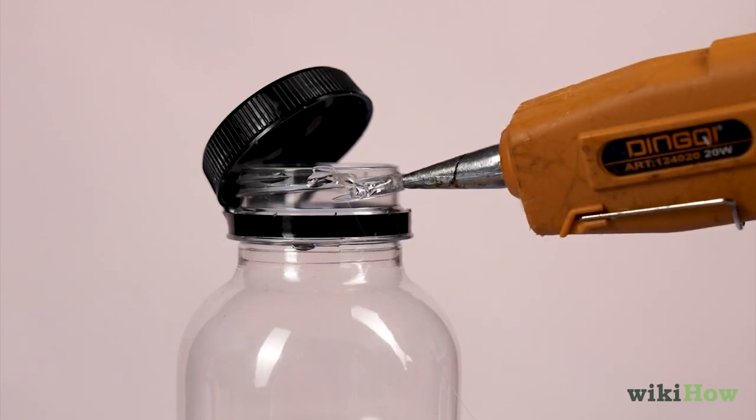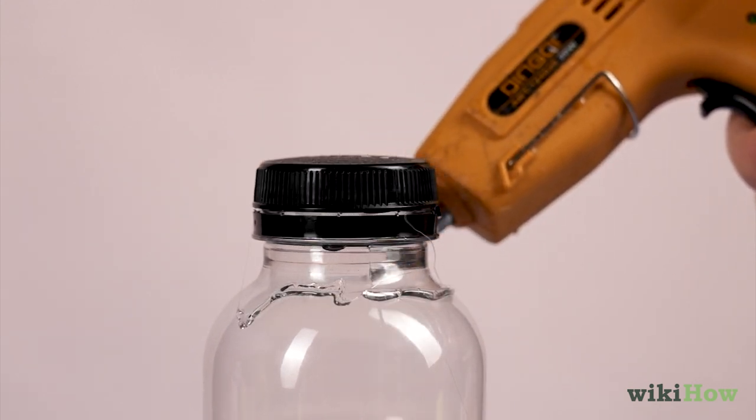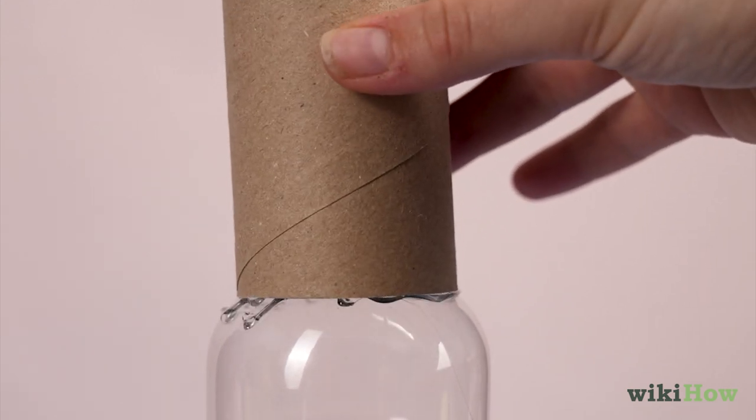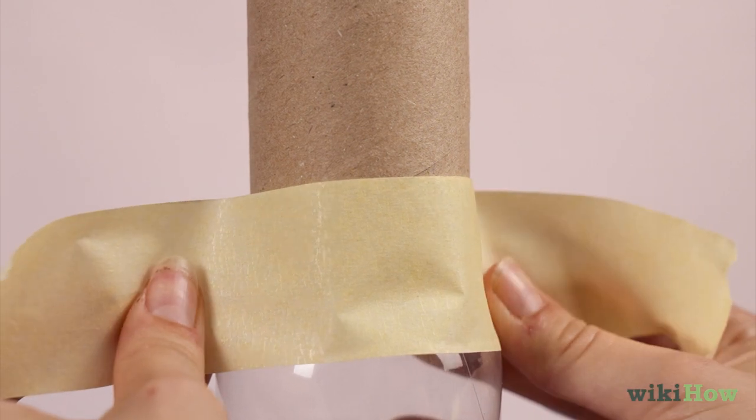Glue the lids onto the bottles and attach a toilet roll tube to create a handle. Secure the tube with craft glue or masking tape.